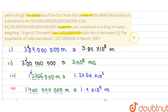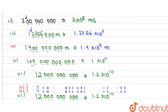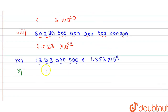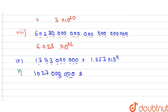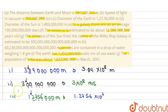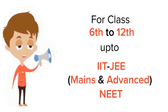Now the last statement: the population of India was about 1,027,000,000 in March 2001. So the number is 1,027,000,000. Just count the number of digits: 1, 2, 3, 4, 5, 6, 7, 8, 9. So we can write 1.027 × 10⁹. In this way, we have calculated all the numbers in standard form. Thank you.